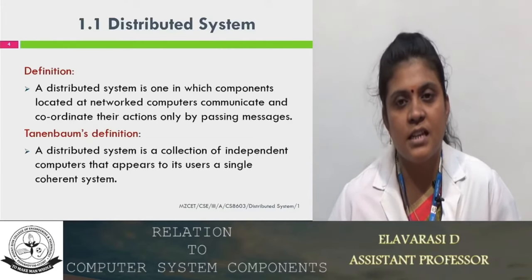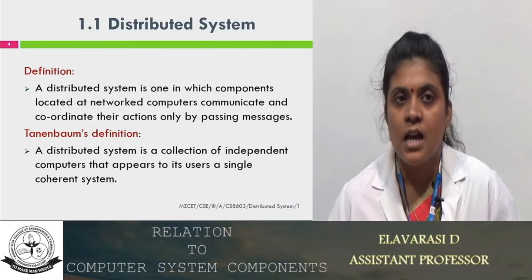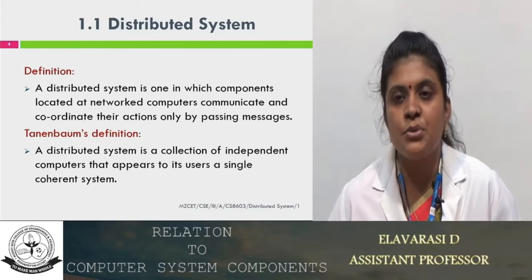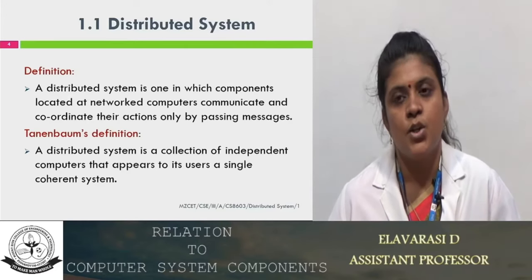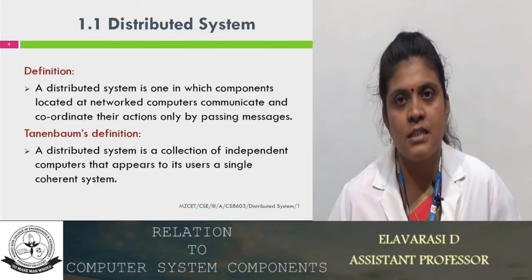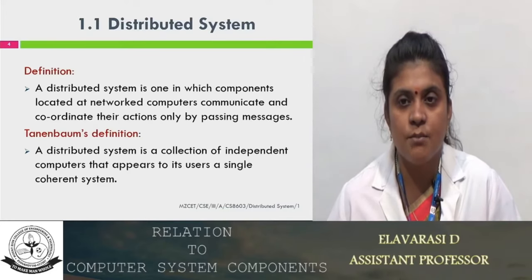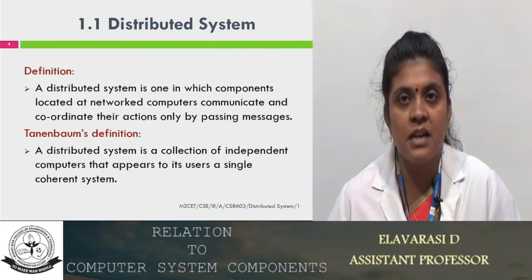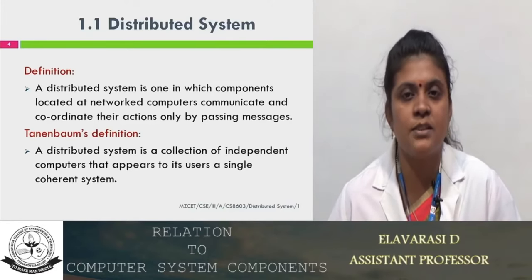Another definition: a distributed system is a collection of independent computers, but it appears to the user as a single coherent system. What this means is the applications are distributed in different systems, but for the users it appears as a single coherent system.